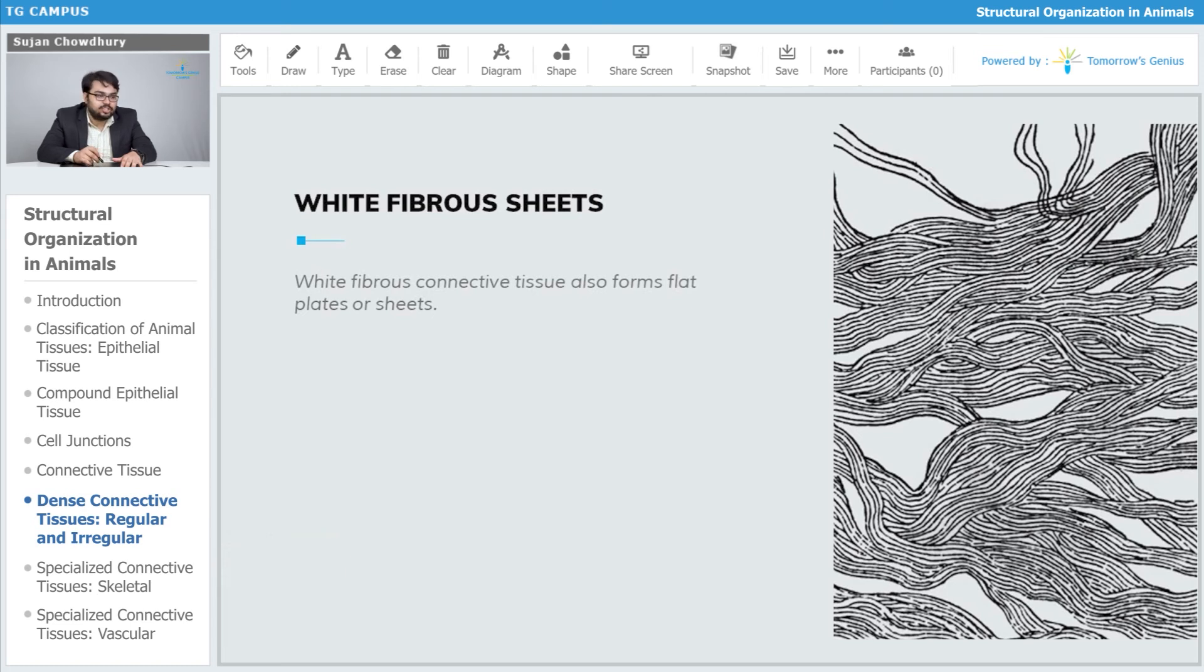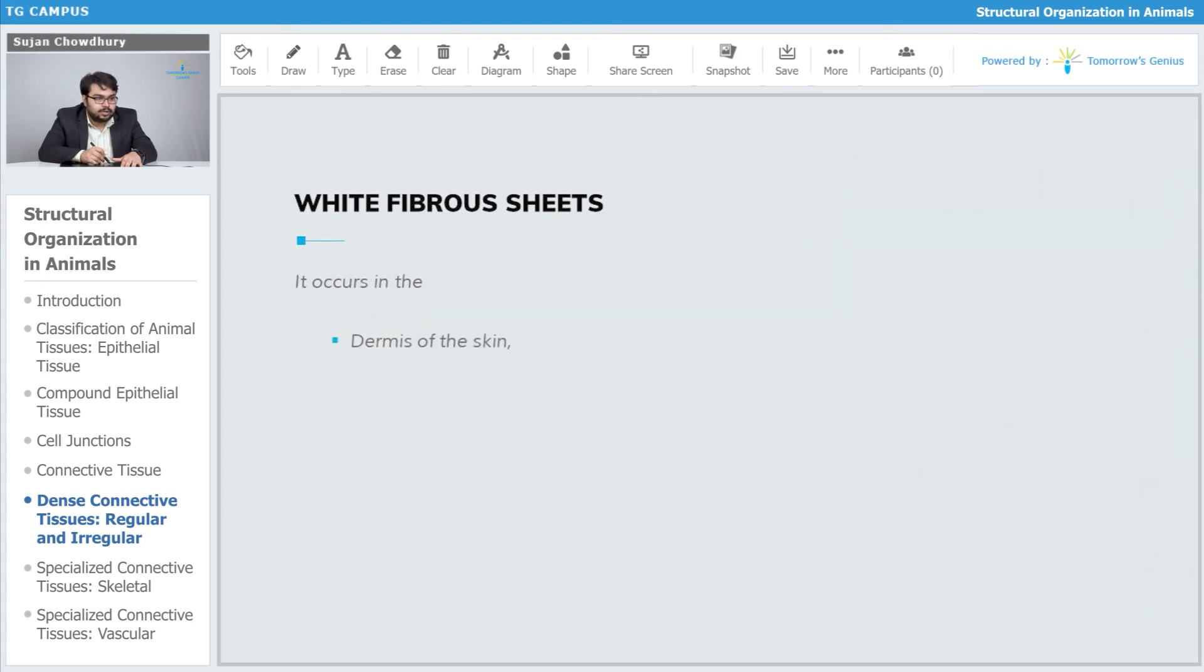White fibrous sheets: the white fibrous connective tissue also forms flat plate or sheet-like structures. Here you can see an overview of the sheet-like structure. It occurs in the dermis of skin. The outermost layer of skin is epidermis, and below the epidermis we have dermis. Below dermis we find white fibrous connective tissue which is formed and arranged like a sheet.